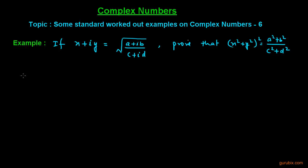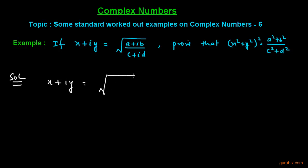This is a very easy question, so let us see how to solve it. We are given x plus iota y is equal to the square root of (a plus iota b) over (c plus iota d).